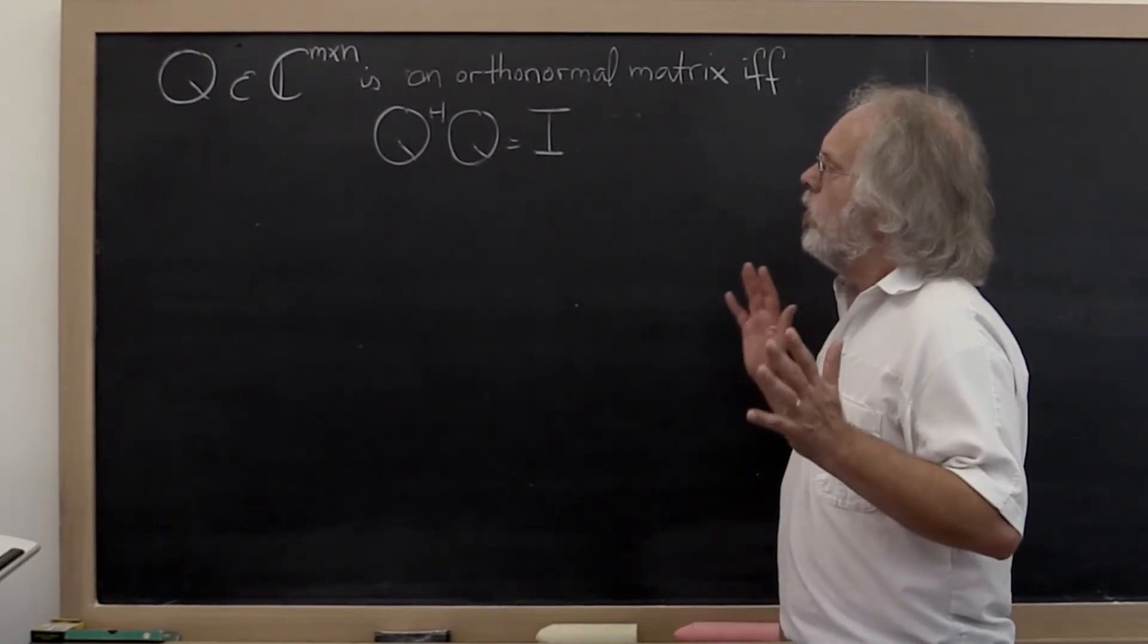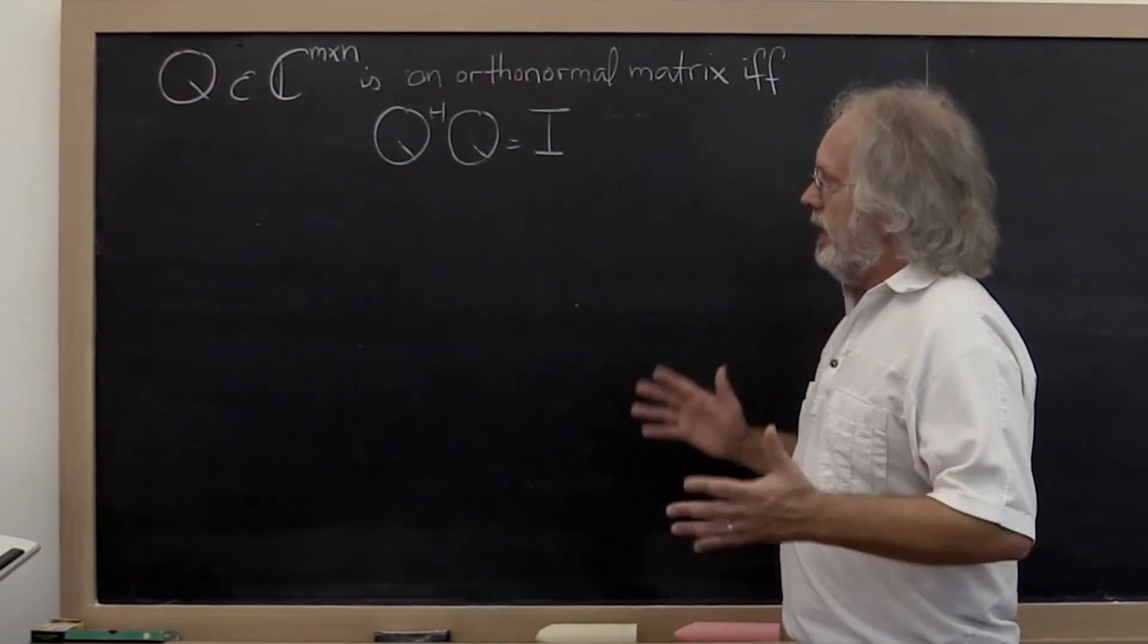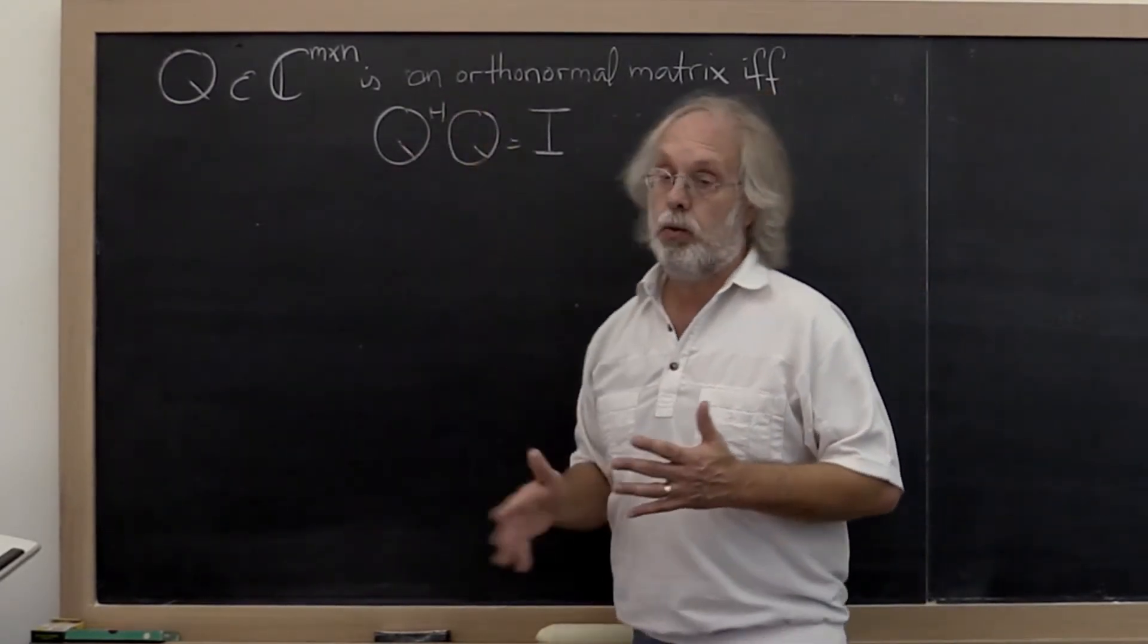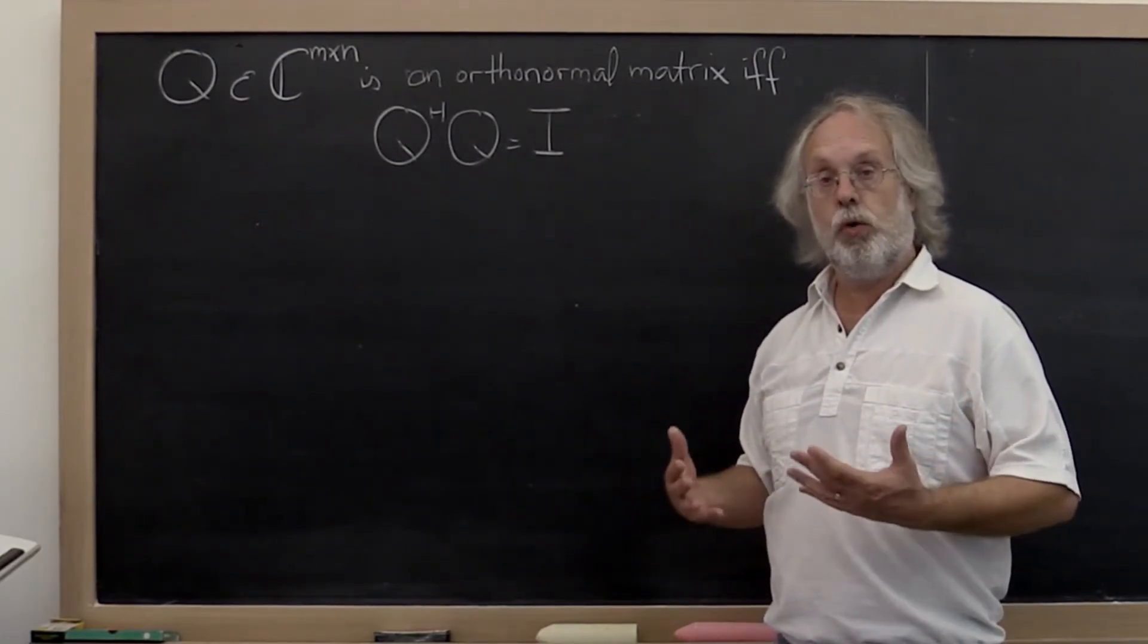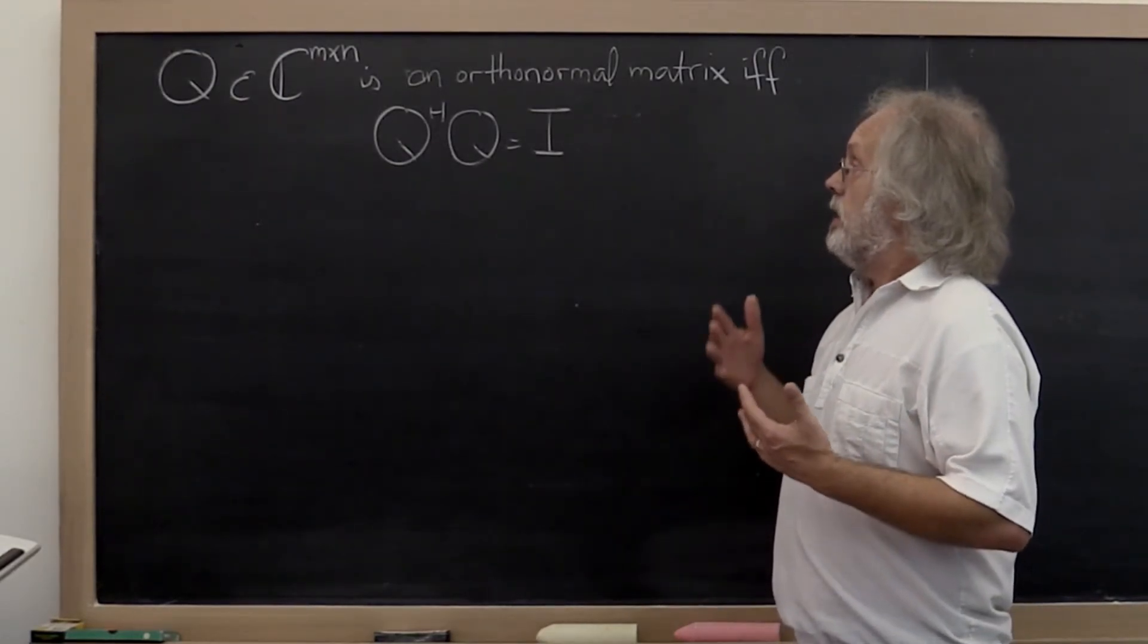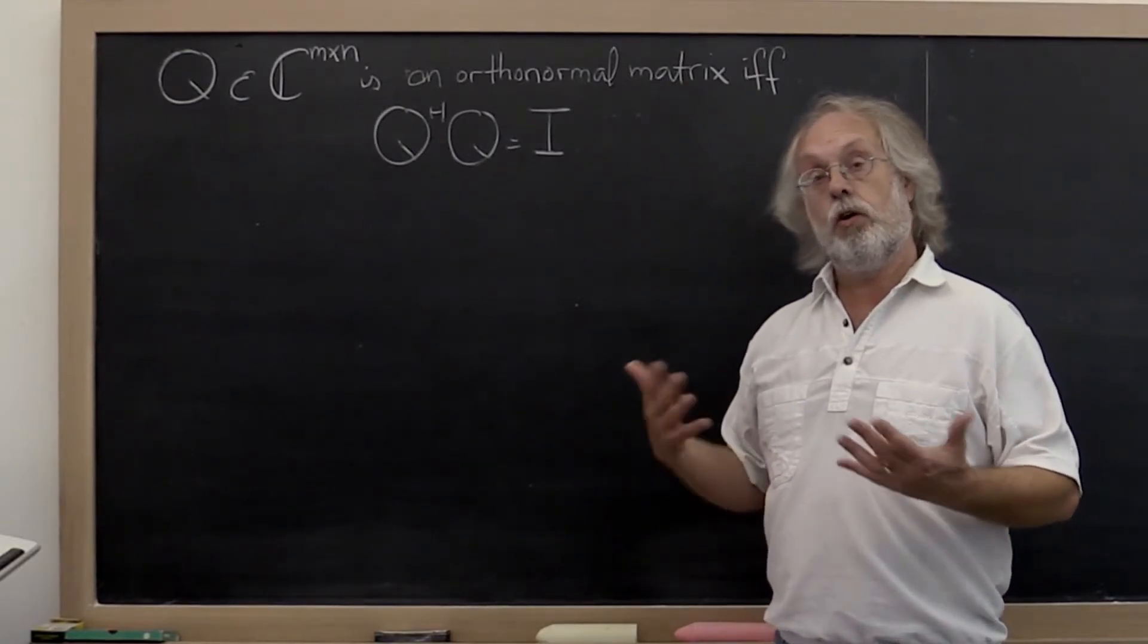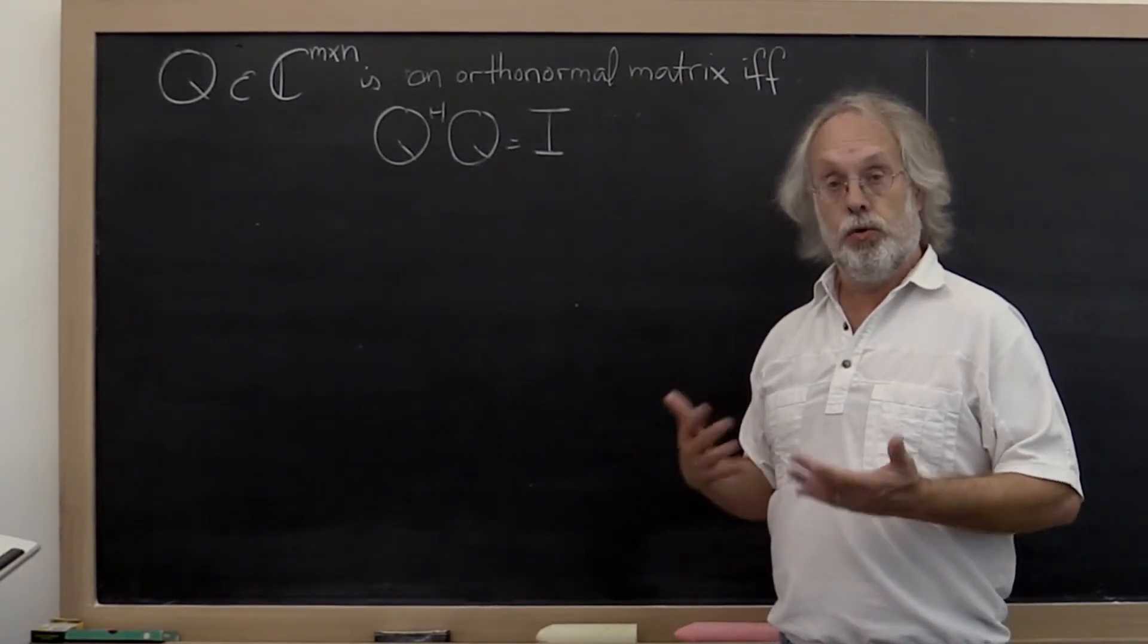Now the case where m is equal to n turns out to be extremely important. It is so important that those matrices have their own special name. They're known as unitary matrices.